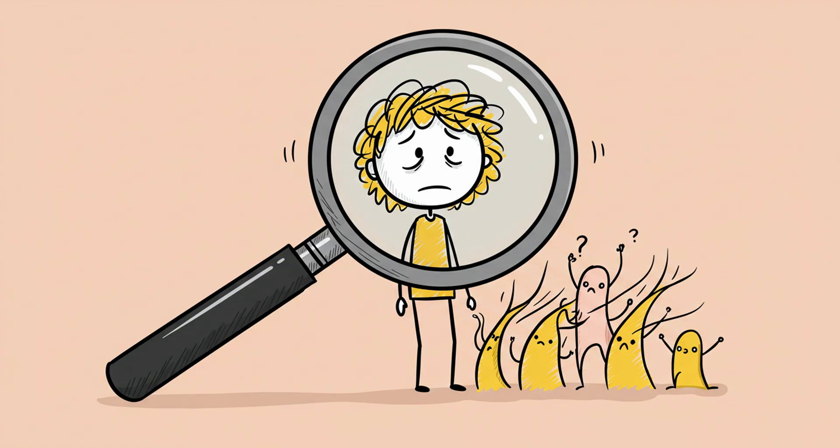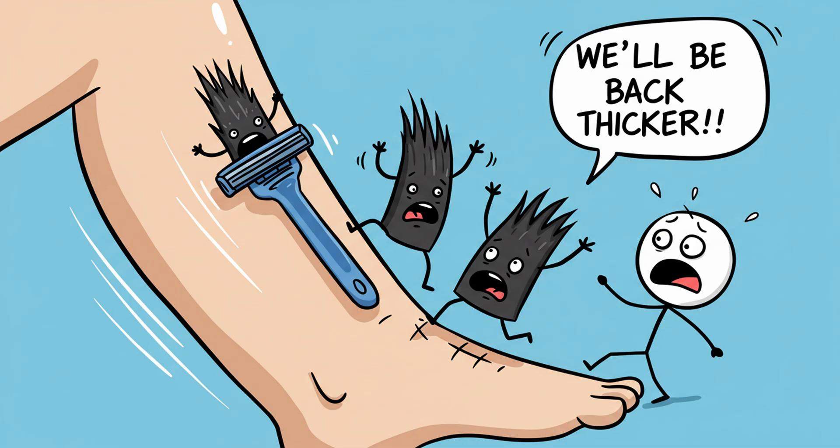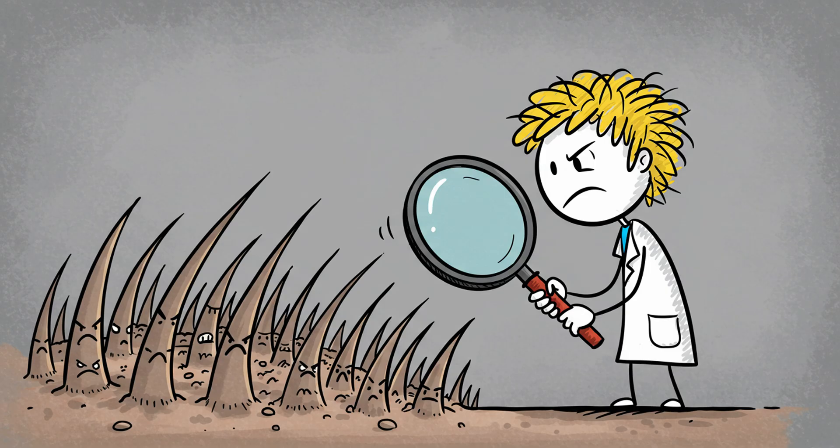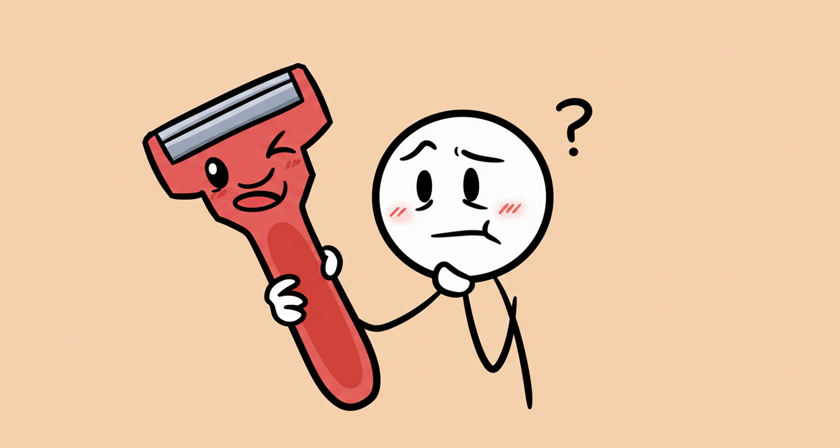Number three, the razor illusion. One of the oldest grooming myths that shaving makes hair grow back darker, thicker, and faster. But biologically, it's impossible. Hair growth happens inside the follicle, beneath the skin. Shaving only cuts the strand at the surface, where it's dead keratin, not living tissue.